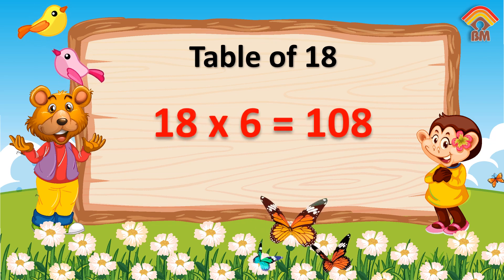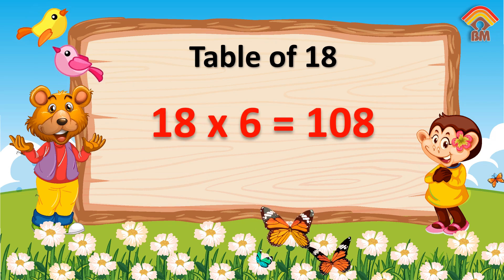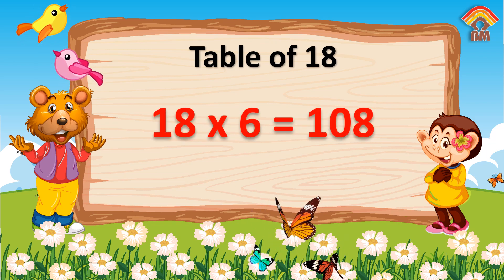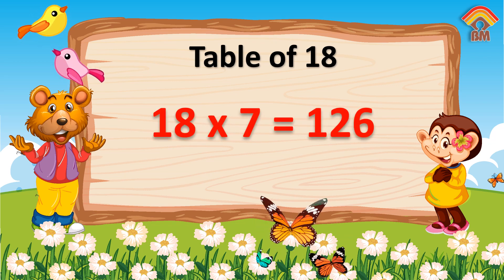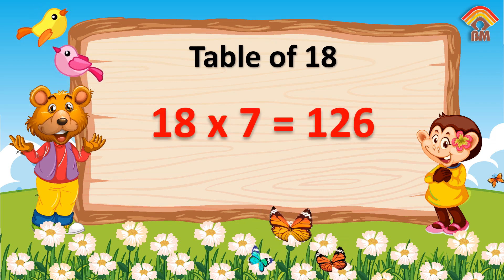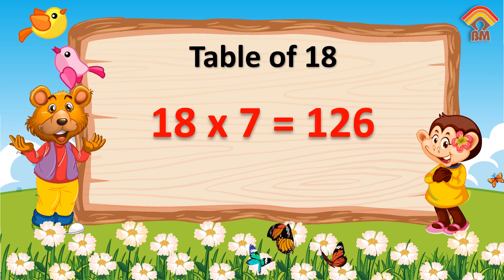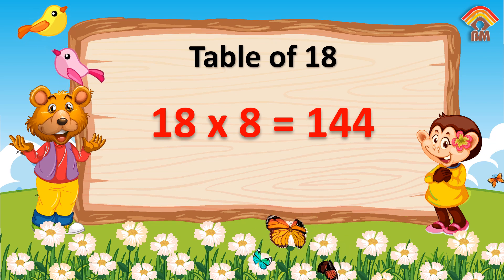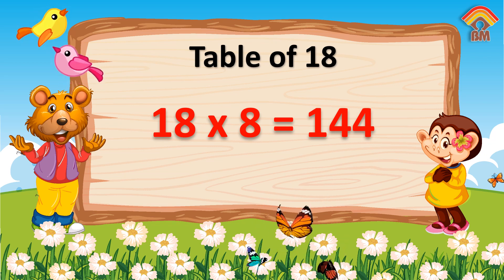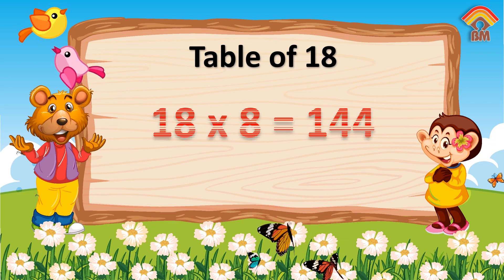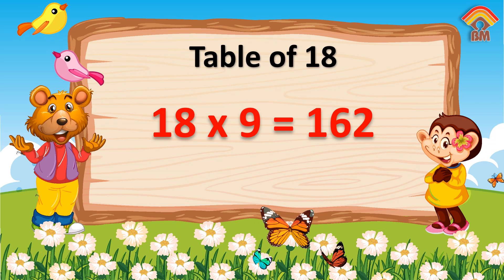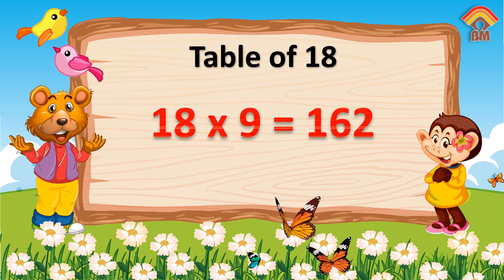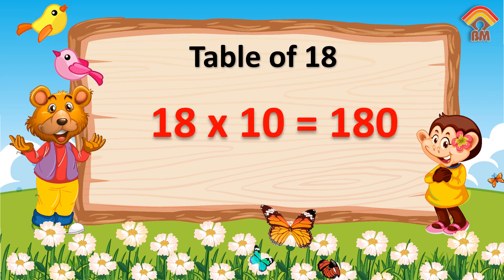18 sixes are 108. 18 sevens are 126. 18 eights are 144. 18 nines are 162. 18 tens are 180.